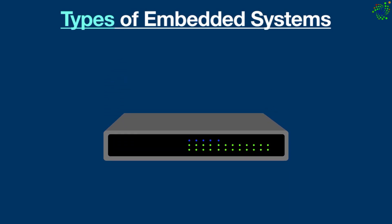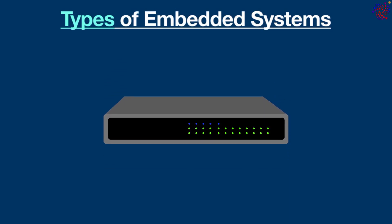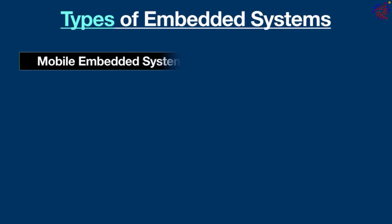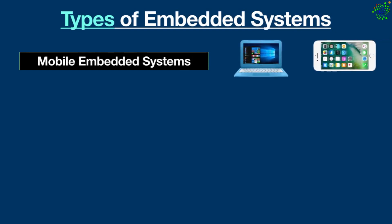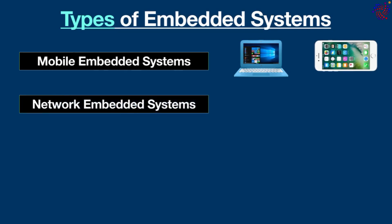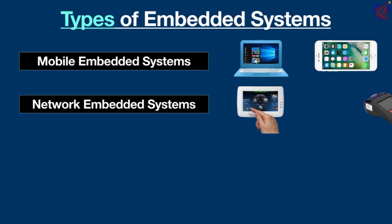Now the most important part — types of embedded systems. There are many types, but the most common ones are: mobile embedded systems, which are small-sized systems designed to be portable, for example laptops, mobile phones, and smart watches; and network embedded systems, which are connected to a network to provide output to other systems — examples include home security systems, point-of-sale terminals, and ATMs.